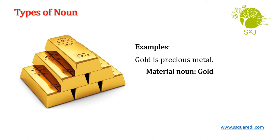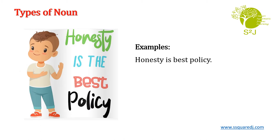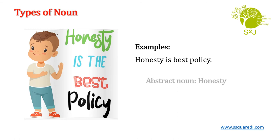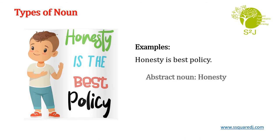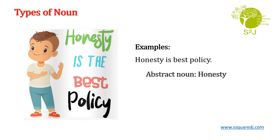Let us see one more example. Honesty is the best policy. In this sentence, honesty is an abstract noun. We are telling about the quality or the state of mind — so abstract noun: honesty.